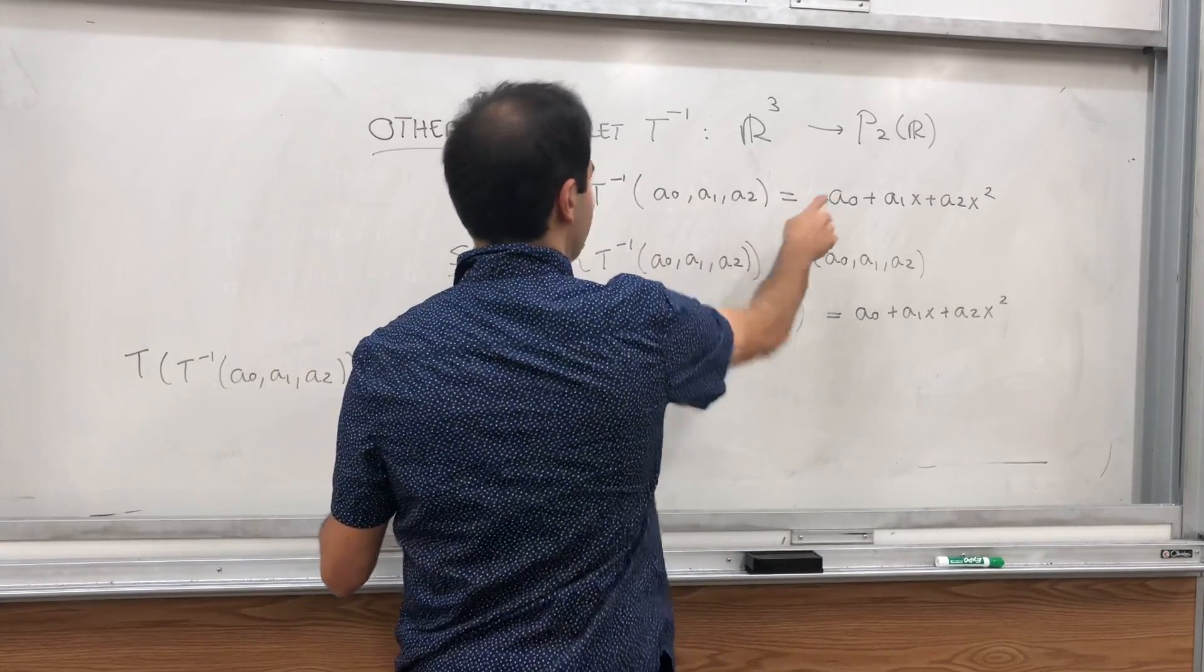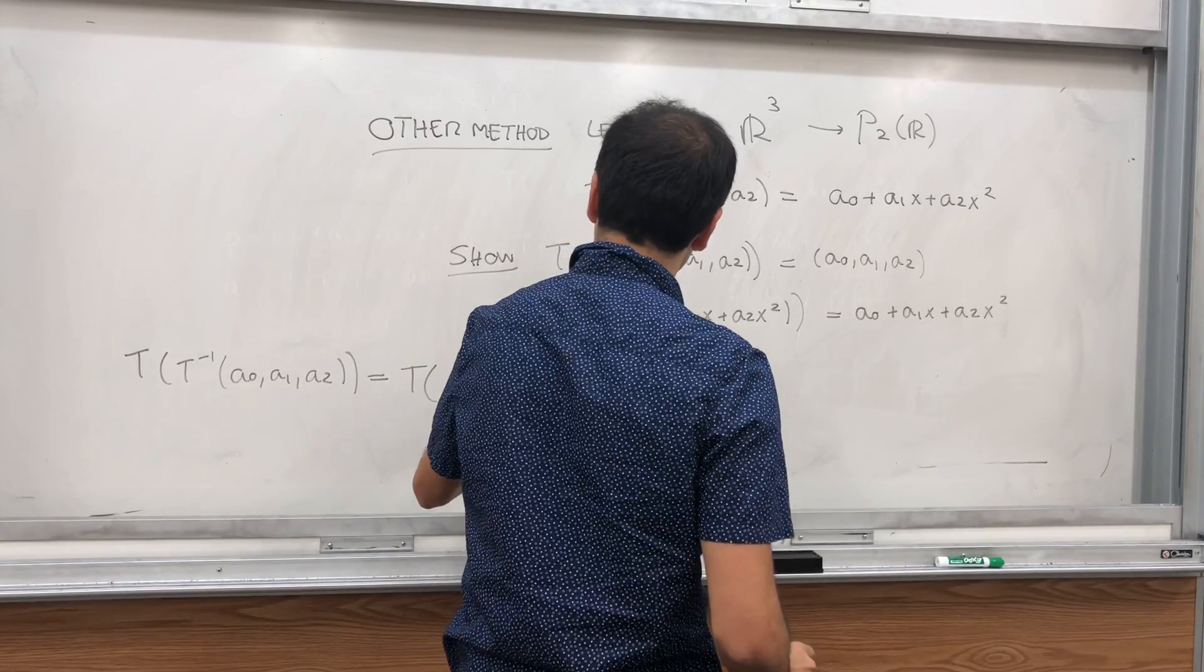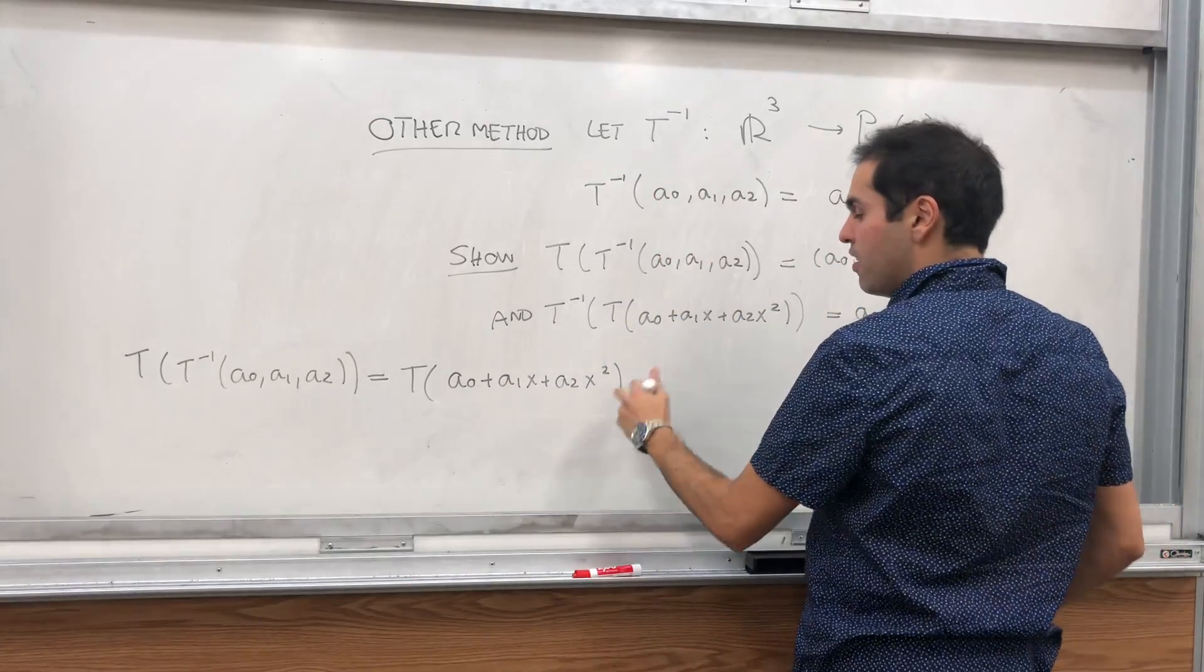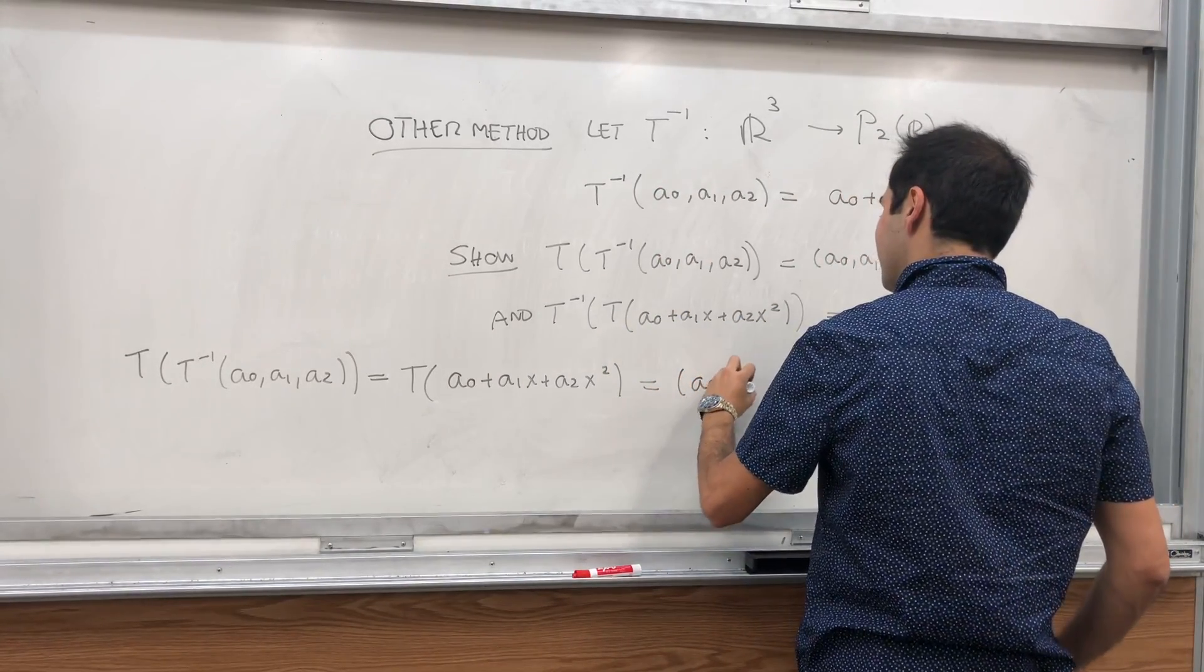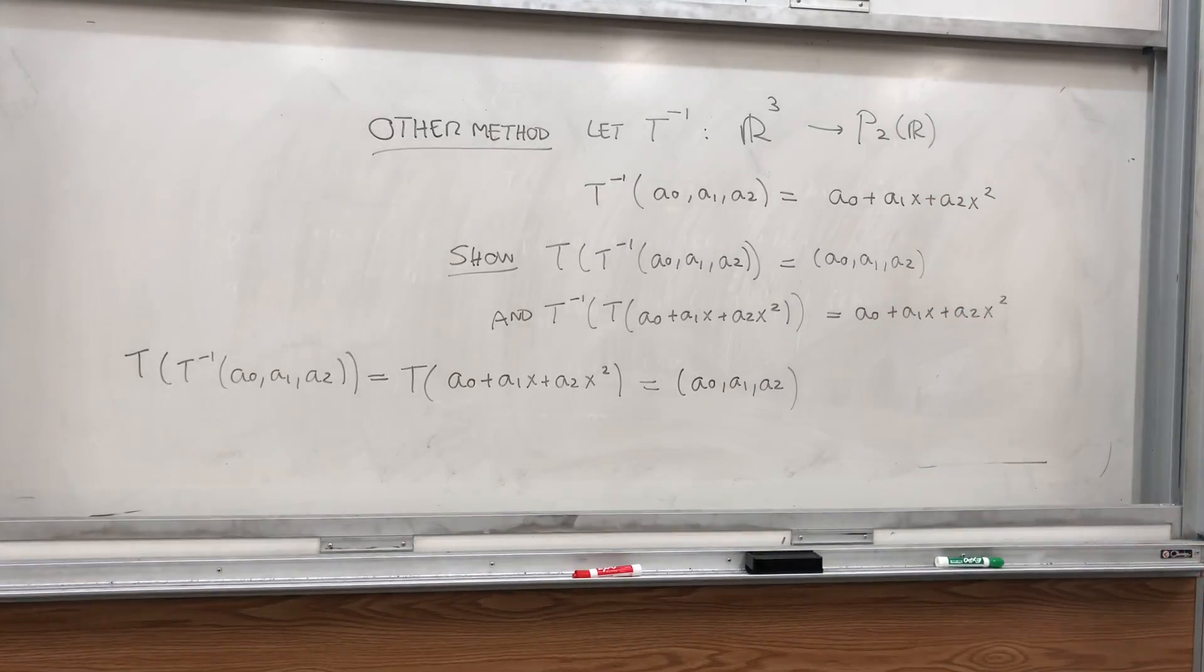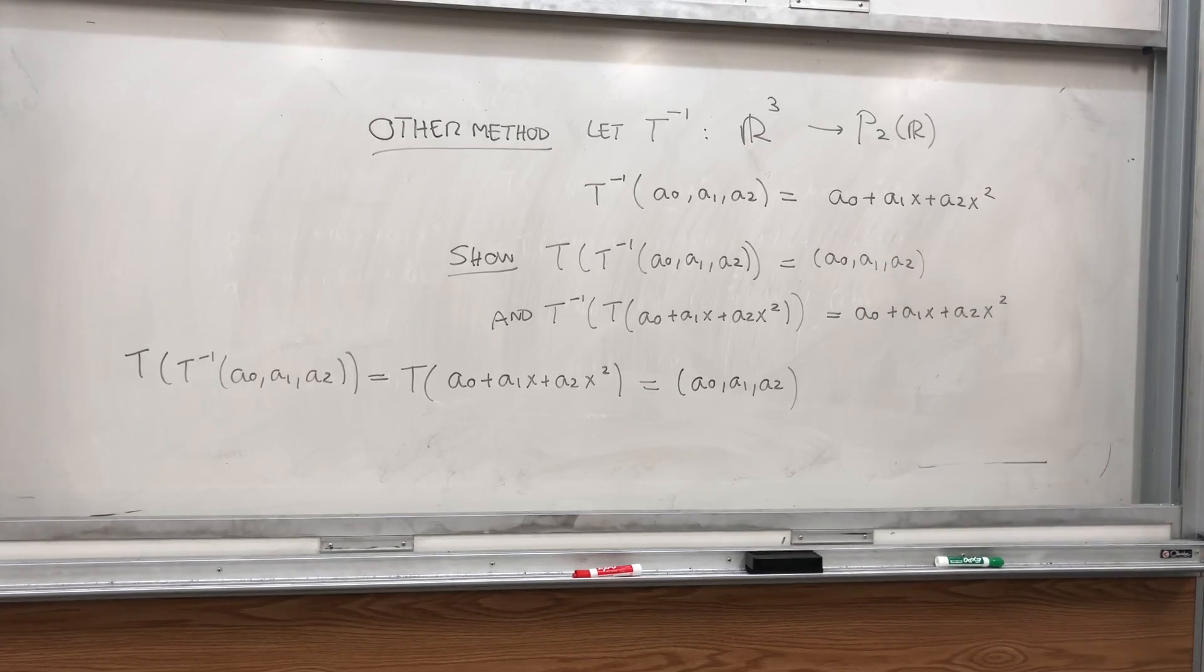a0 plus a1x plus a2x squared. And what does T do? T takes this polynomial and collects the coefficients. And it's precisely what you want to show. And same, we can do the other part similarly.